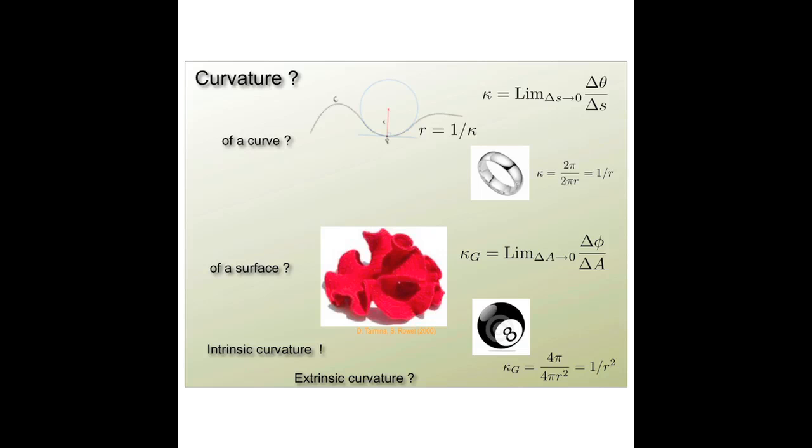If I wanted to ask the same question for a two-dimensional surface sitting in three dimensions, I have to ask what is the solid angle? What is the size of the cone that I essentially need in order to accommodate that little area, which I'm trying to characterize how strongly or how weakly curved it is?